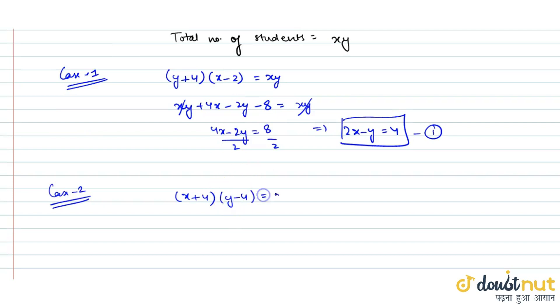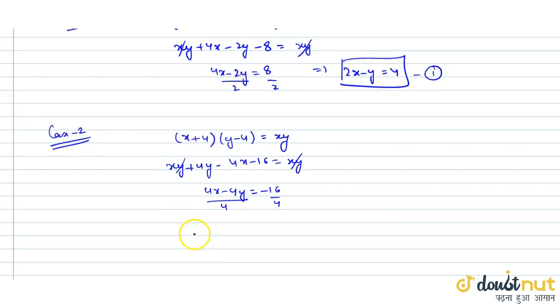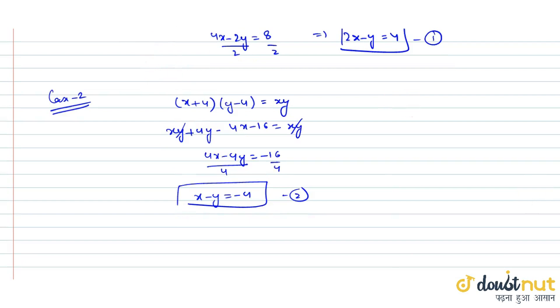Case 2: If there are 4 more rows and y minus 4 students per row, then (x plus 4)(y minus 4) equals xy. This gives xy plus 4y minus 4x minus 16 equals xy. xy cancels out. So 4y minus 4x equals 16, which gives x minus y equals minus 4.